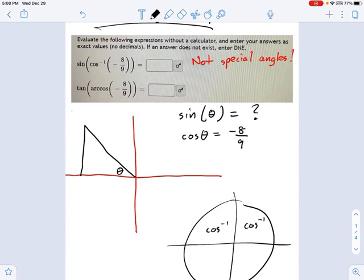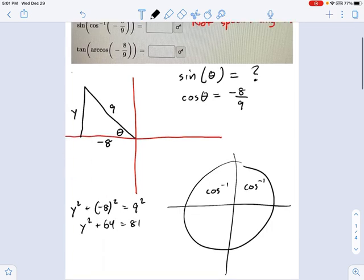Well, that's great. And negative eight-ninths means adjacent over hypotenuse. And we just need to finish the triangle. We need to complete this using Pythagorean theorem. So I'm going to call that y. That means y squared plus negative eight squared equals nine squared. So that means y squared plus 64 equals 81. So that means y squared equals 17.